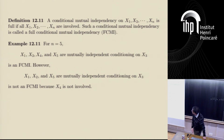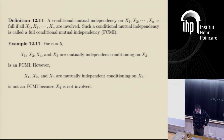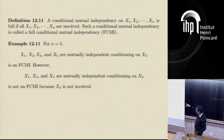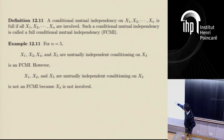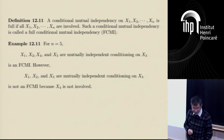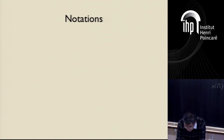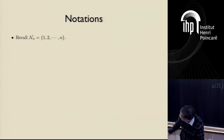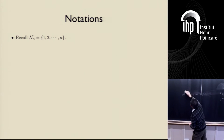Example for n equals five: X1, X2, X4, X5 are mutually independent conditioning on X3. We call this an FCMI — full conditional mutual independence — because all five random variables are involved. Whereas X1, X2, and X5 mutually independent conditioning on X3 is not FCMI, because X4 is not involved. This notation is one of the central concepts, so I put it on the blackboard.